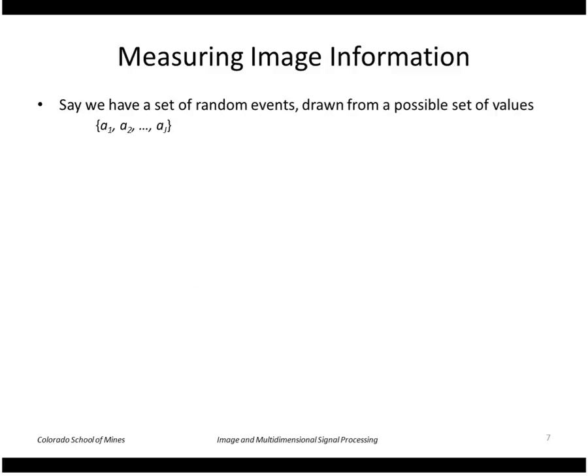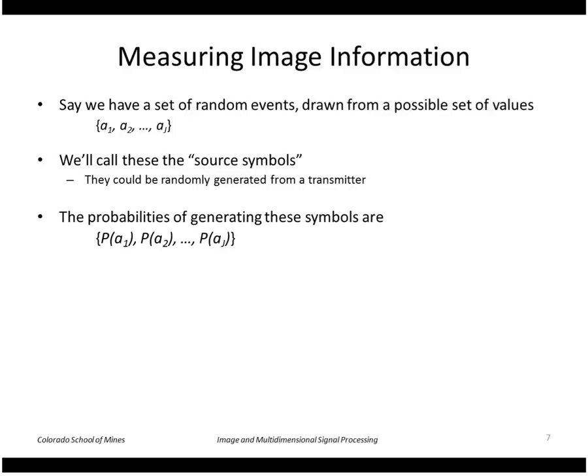Say we have a set of random events drawn from possible values a1 through a sub j. We'll call these the source symbols. They could be randomly generated from a transmitter. The probabilities of generating these symbols, assume we know that, is P(a1), P(a2), etc. The information carried by a single symbol is negative log of the probability, as we saw before.